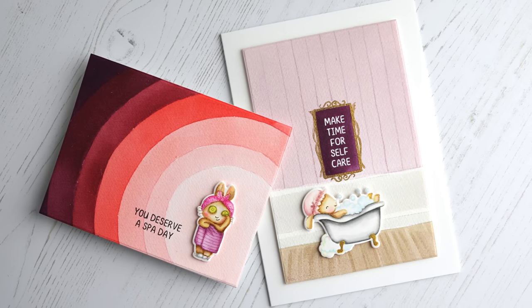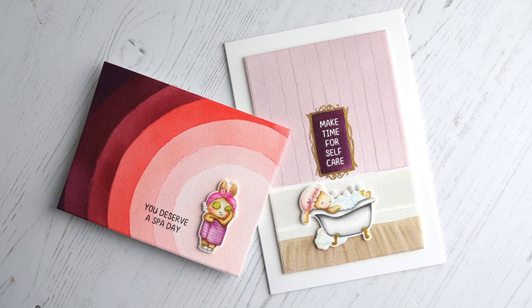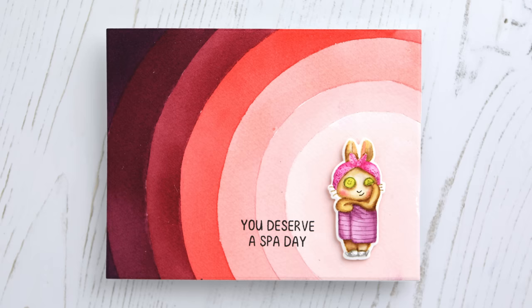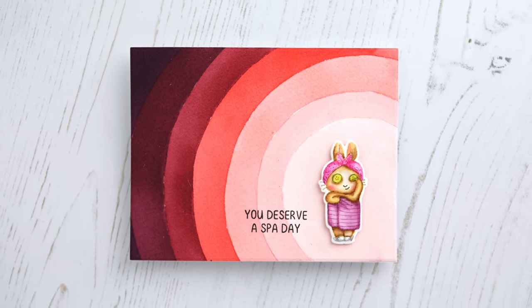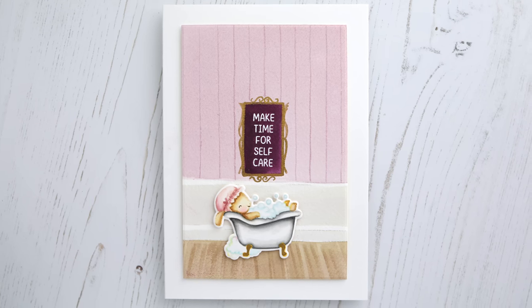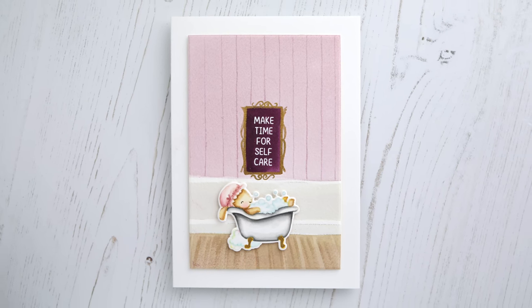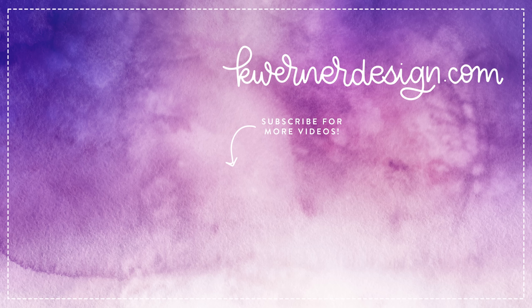So those are my cards for today. I hope this gives you an idea of something you can do with some of your animal or people stamps for when you're building a scene. Go ahead and give it dramatic negative space. Put that animal or person far away from the corners and just let it breathe a little bit. Thanks so much for watching today. I'll be back soon with another card video.